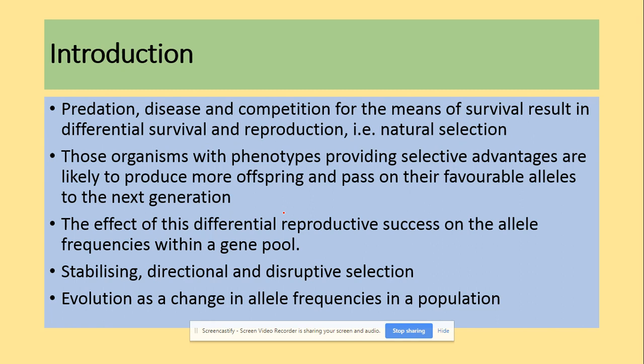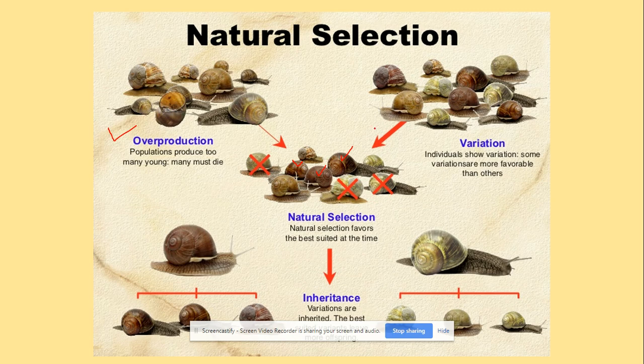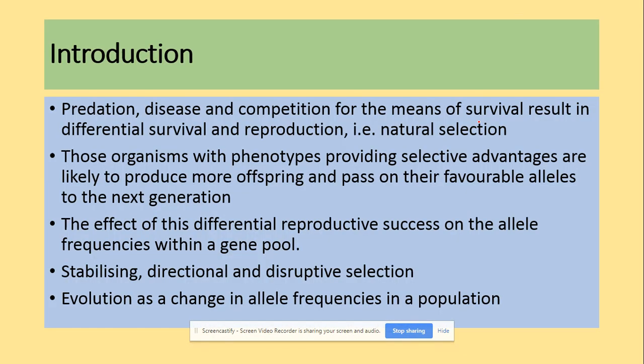Predation, disease, and competition are means of survival pressure and result in differential survival and reproduction. Some individuals are less adapted - for example, lighter-colored snails could be easily seen by predators. Organisms with phenotypes providing selective advantage are likely to produce more offspring and pass on those advantageous alleles to the next generation, increasing their allele frequency in the gene pool.